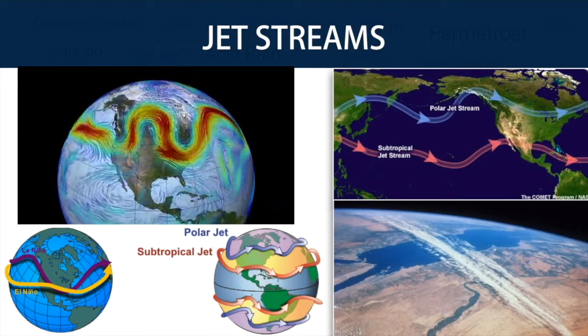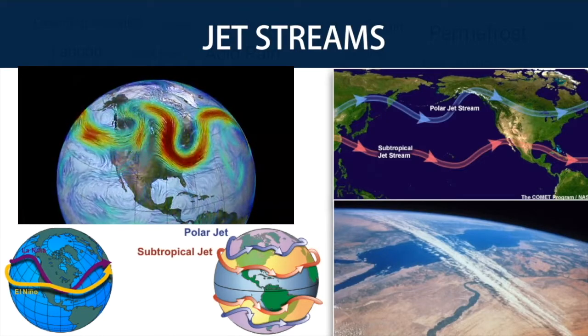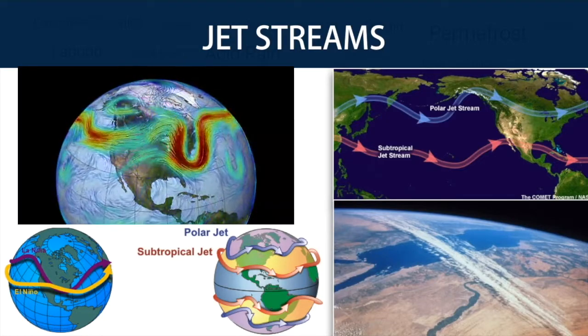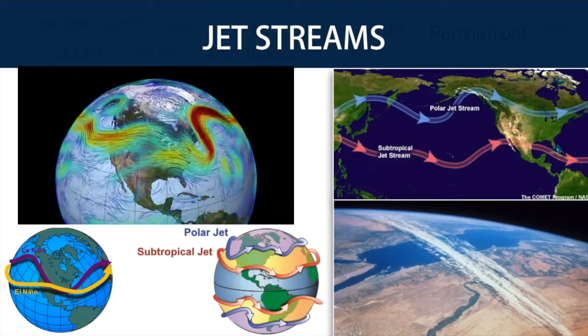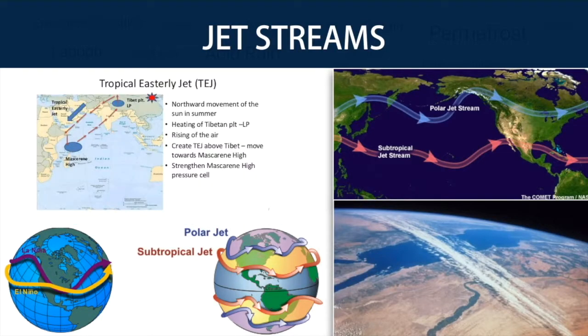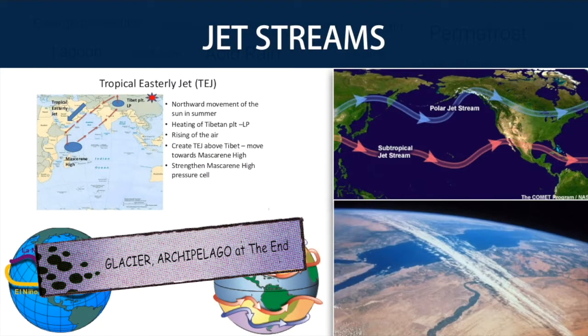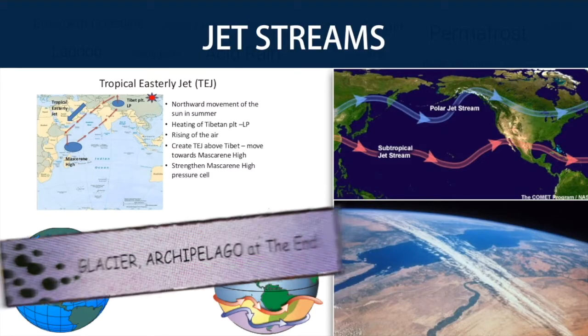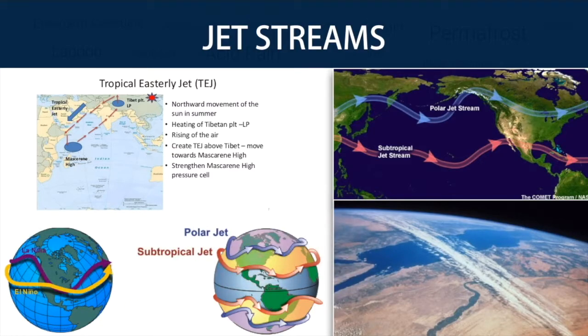Examples of jet streams are polar jet streams, subtropical jet streams, and tropical easterly jet streams. Tropical easterly jet streams are important as they help in bringing southwest monsoons to India.